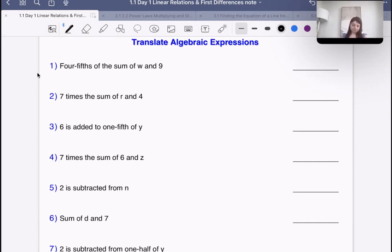The first one says four-fifths of the sum of w and 9. First of all, what do we mean by the sum? The sum means addition. So the sum of w and 9 means w plus 9, because we're adding the two. The sum always means we add.